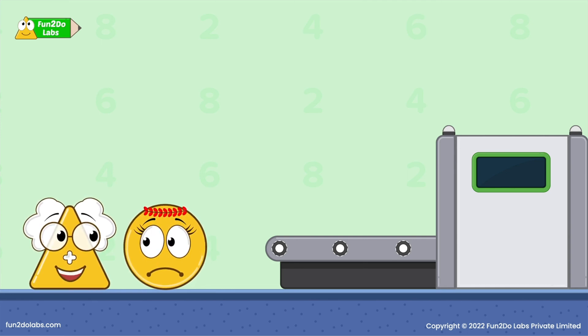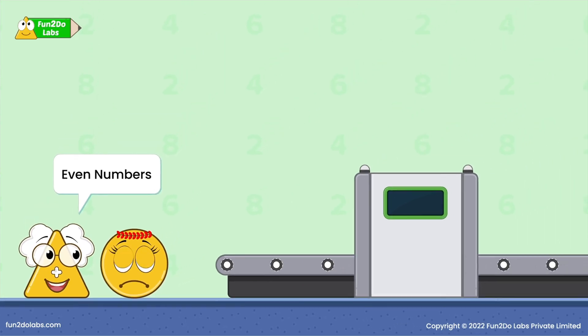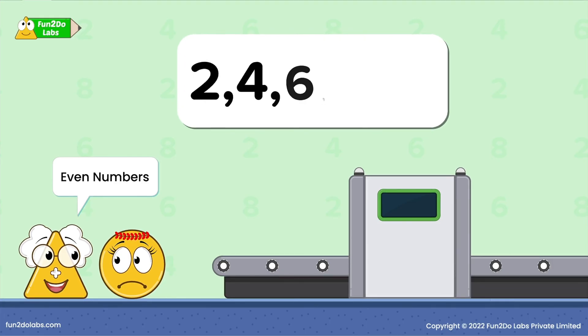Such numbers which can be easily divided into groups of two are called even numbers. For example, two, four, six, eight, ten are even numbers.